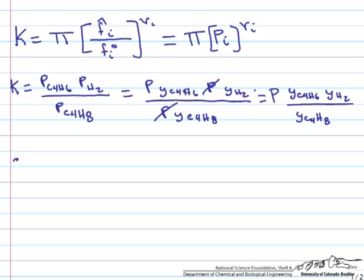So now going on to case A, we can set up an ICE diagram of what happens for this reaction. So we have C4H8 in equilibrium with C4H6 and H2. And let's say we start with one mole of C4H8 and we don't have any hydrogen or C4H6.